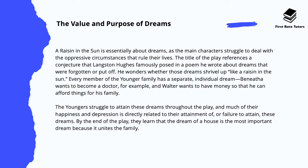When it comes to the themes in this play, the first is the value and purpose of dreams. A Raisin in the Sun is really about dreams, and the main characters struggle to deal with oppressive circumstances that rule their lives. The title of the play references a conjecture that Langston Hughes famously proposed in a poem about dreams that were forgotten or put off — he wonders in this poem whether those dreams shrivel up 'like a raisin in the sun.' Every member of the Younger family has a separate individual dream: Benita wants to become a doctor, Walter wants to have money so he can afford things for his family. The Youngers struggle to attain these dreams throughout the play, and much of their happiness and depression is directly related to the attainment — or failure to attain — these dreams. By the end of the play, they learn that the dream of the house is the most important dream, because it unites their family.